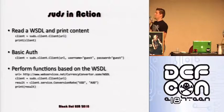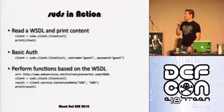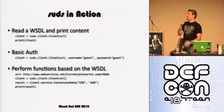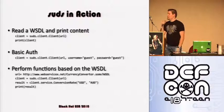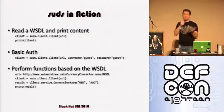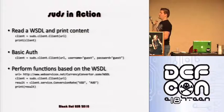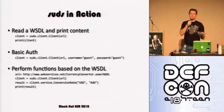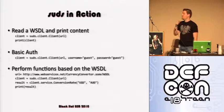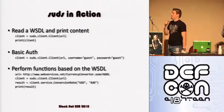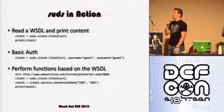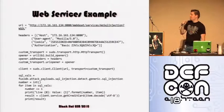There are two findings already by the time you get here. Basic auth is supported by merely adding a username and password. To perform functions based on the WSDL you just basically call the method. Here's an example of doing a currency conversion: you point it to the WSDL, create the client, get your results, and then print your result.